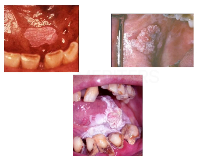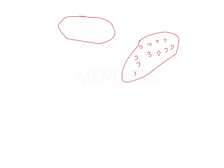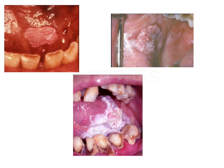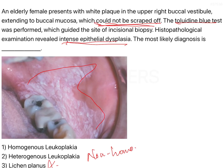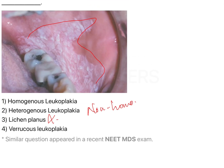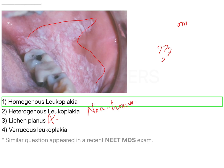The third image shows an appearance like cauliflower growth — rough and pebbled like cauliflower florets — this is called verrucous growth, and verrucous leukoplakia gives such an appearance. So based on these three images: one is homogenous, two is heterogeneous, three is verrucous. Applying this concept to the question image — it appears as a single patch without any nodular or verrucous growth — so the answer is homogenous leukoplakia.